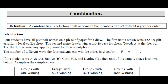Combinations. A combination is a selection of all or some of the members of a set without regard for order. The locks on your locker are called combination locks — but does the order you put the numbers in matter? Yes. So they're really permutation locks. If it was a combination lock it wouldn't care what order you put the numbers in. When don't we care about order? When you're dealt cards — you don't care what order they come in.